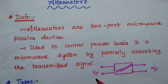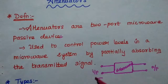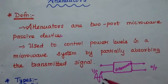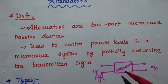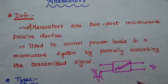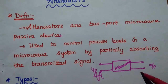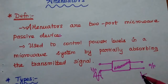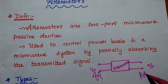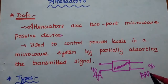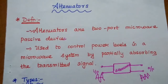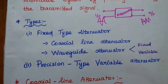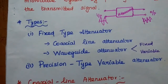So here I am going to give the input like this. Some of the power is absorbed by the attenuator, and at the output side I can get the controlled power. This is the microwave attenuator. There are different types of attenuators available.